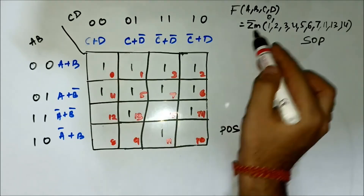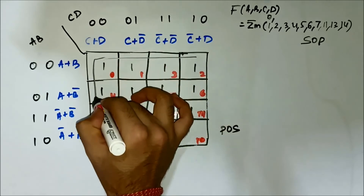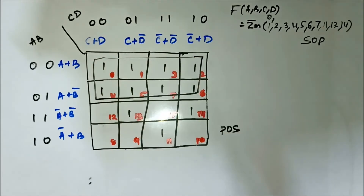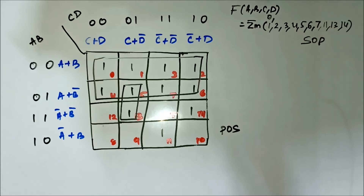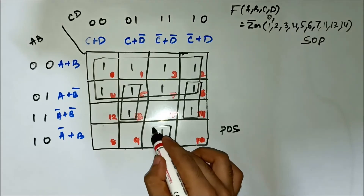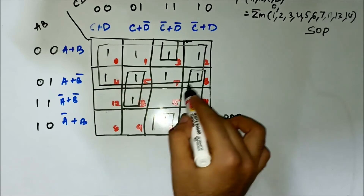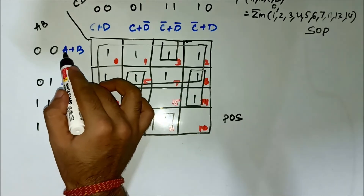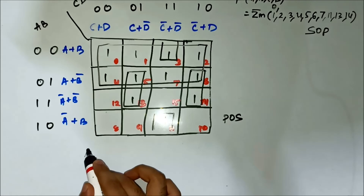The group formation we will do: first will be an octet involving cells 0, 1, 3, 2, 4, 5, 7, 6. Then we can form a pair, and then again another pair, and then a pair involving two more cells. For this octet involving cells 0, 1, 3, 2, 4, 5, 7, 6 — on the horizontal side we have A bar common, and on the vertical side there is nothing common. So it is simply A bar for this octet.